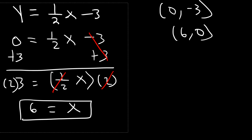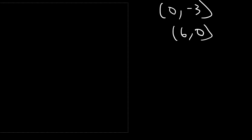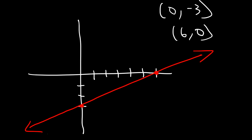Now that we have that, we can go ahead and make the graph. Let's plot the x-intercept first — it's located at an x-value of 6 with a y-value of 0. Then let's plot the y-intercept, which is at (0, −3). Simply connect the two points with a straight line, and that's how you do it.